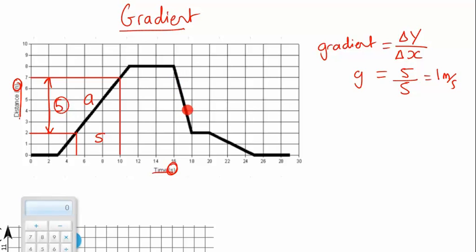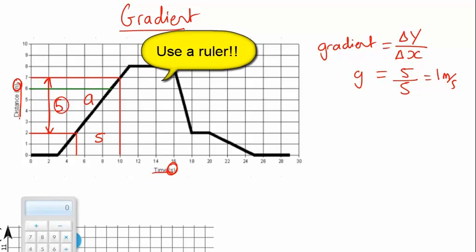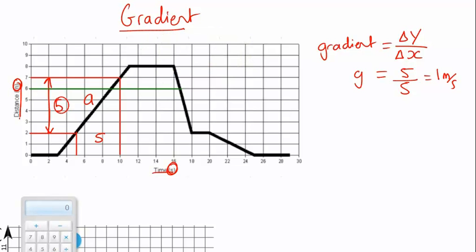Let's try calculating the gradient for this section here where it goes down. I'm going to use a different color pen and exactly the same method. I'll draw a line horizontally out until it reaches the line I want to measure the gradient of, then draw a line directly down.